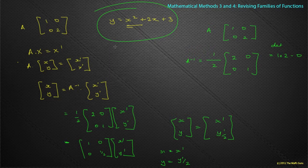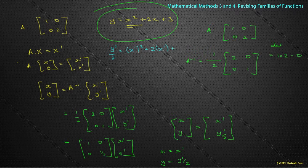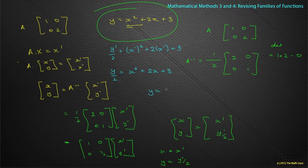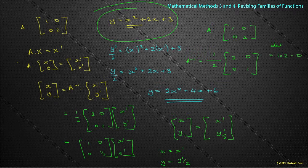So y was y-dashed over 2, and x is the same as x-dashed, so the original equation becomes: y-dashed/2 = x-dashed² + 2·x-dashed + 3. Getting rid of all the dashes: y/2 = x² + 2x + 3. Multiplying everything by 2 gives y = 2x² + 4x + 6. The transformed equation after that matrix gives y = 2x² + 4x + 6.